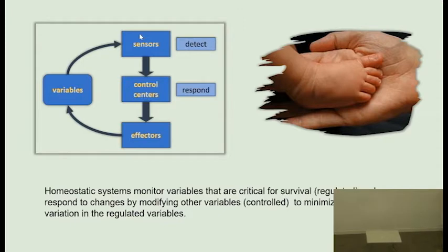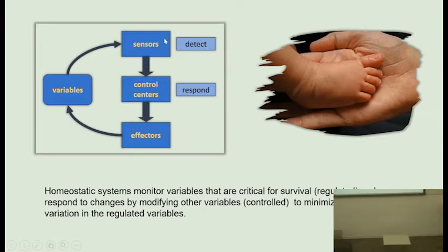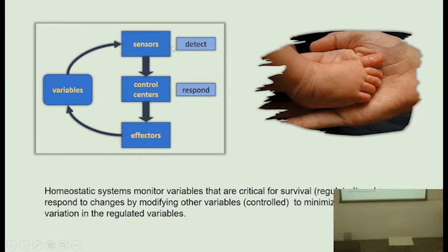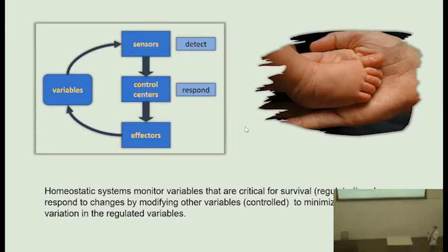Homeostatic mechanisms: there are many systems to maintain homeostasis of different variables. All of them have sensors that detect any variation in what we call regulated variables — the ones that are critical for survival. Blood pressure is probably the most important variable in the body, the one our body is mostly focused on.